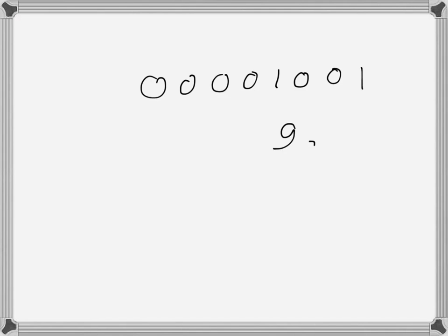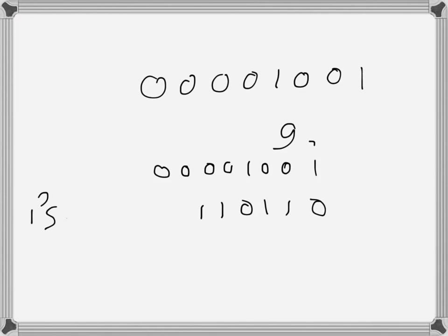When we come to signed complement representation, it involves finding the complement of the number. If we have positive nine and want to express it in signed one's complement representation, we find the one's complement of the whole number, which gives 11110110. That represents negative nine in one's complement representation.